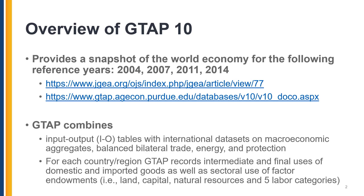For each country region in the GTAP database, we will have intermediate and final uses of domestic and imported goods, as well as sectoral use of factor endowments such as land, capital, natural resources, and five labor categories.